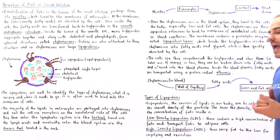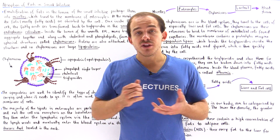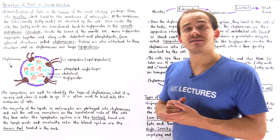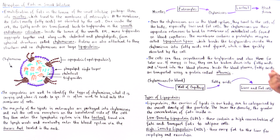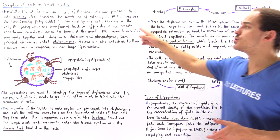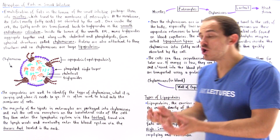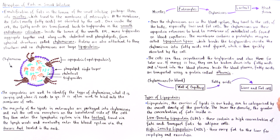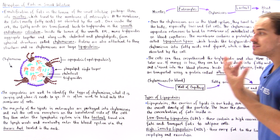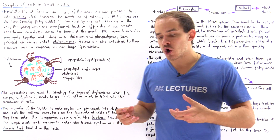Once inside the liver or the fat cell, these fatty acids and glycerol can once again be used to form triglycerides in the smooth endoplasmic reticulum, and we store these triglycerides until the body needs energy.